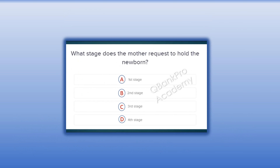What stage does the mother request to hold the newborn? A. First stage. B. Second stage. C. Third stage. D. Fourth stage.